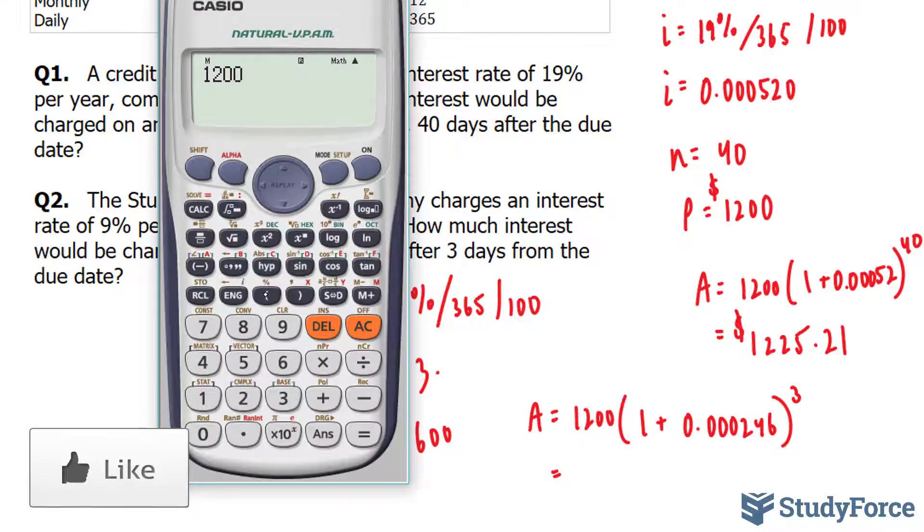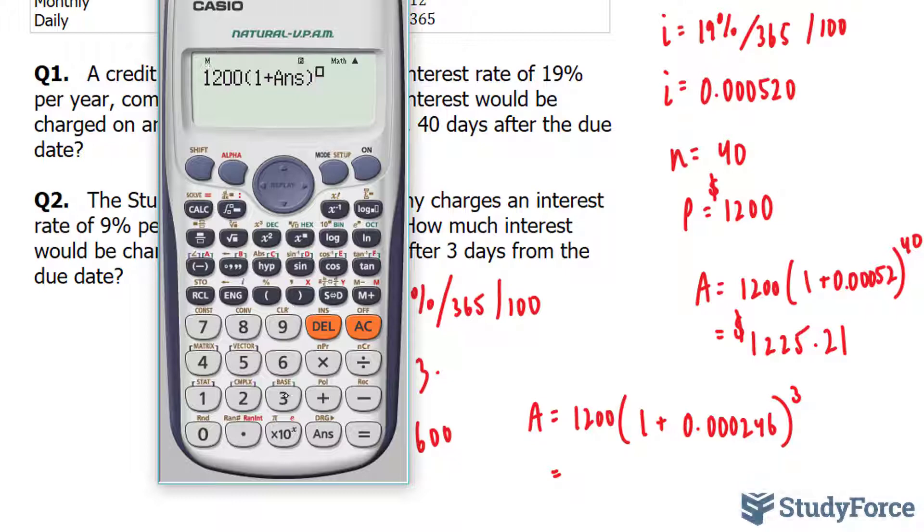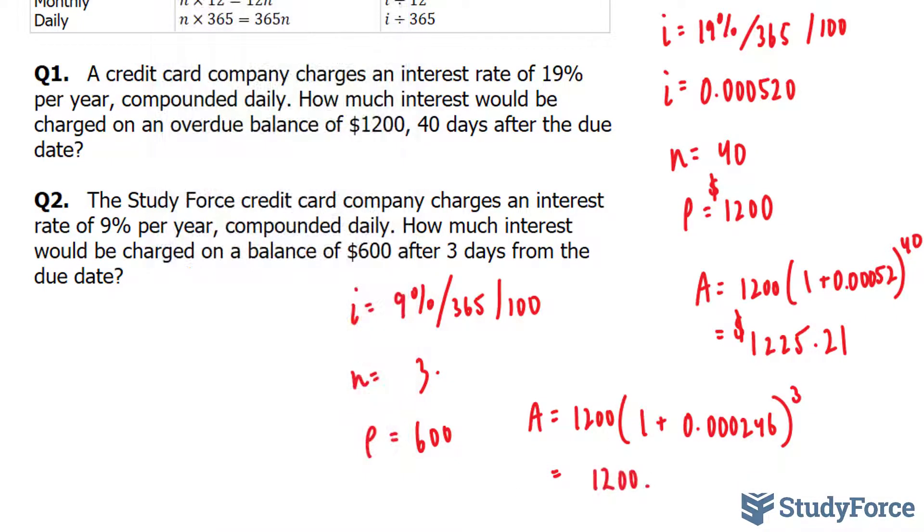1,200 times 1 plus the answer that we just got previously to the power of 3 gives us 1,200 and 88 cents. So in this case, after 3 days, you would owe 88 cents.